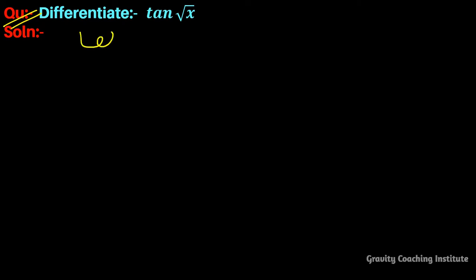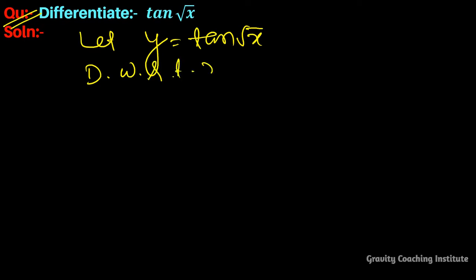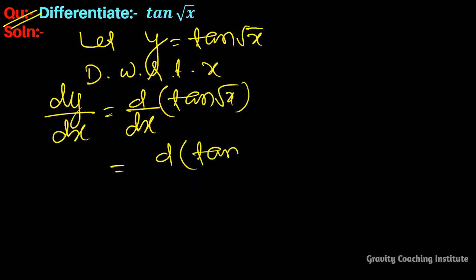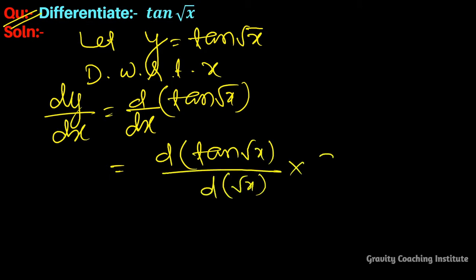Differentiate tan(√x). Let y equal to tan(√x), and now differentiate with respect to x. So dy/dx equals d/dx of tan(√x), and now we use the chain rule: d(tan(√x))/d(√x) multiplied by the derivative of √x with respect to x.